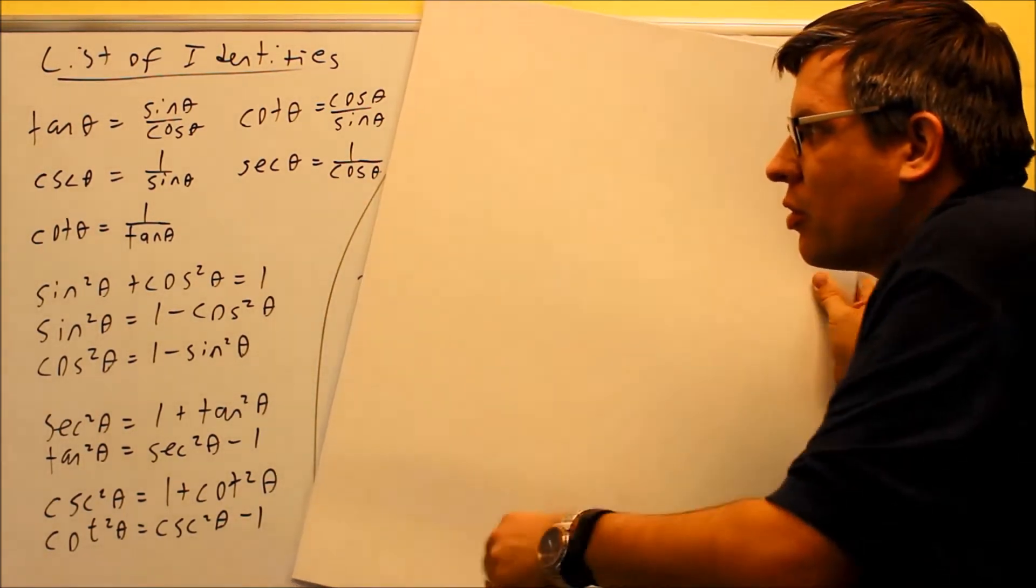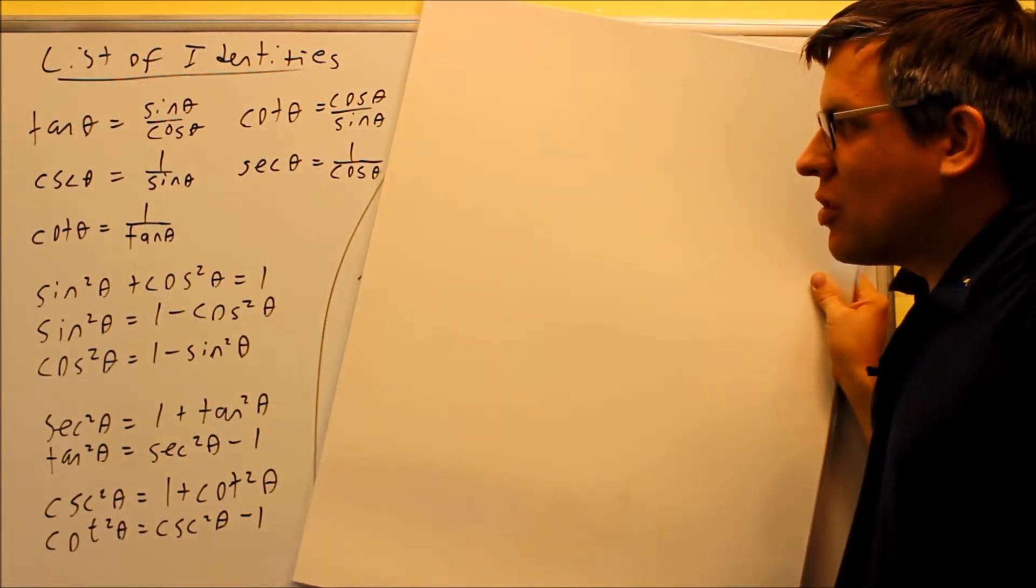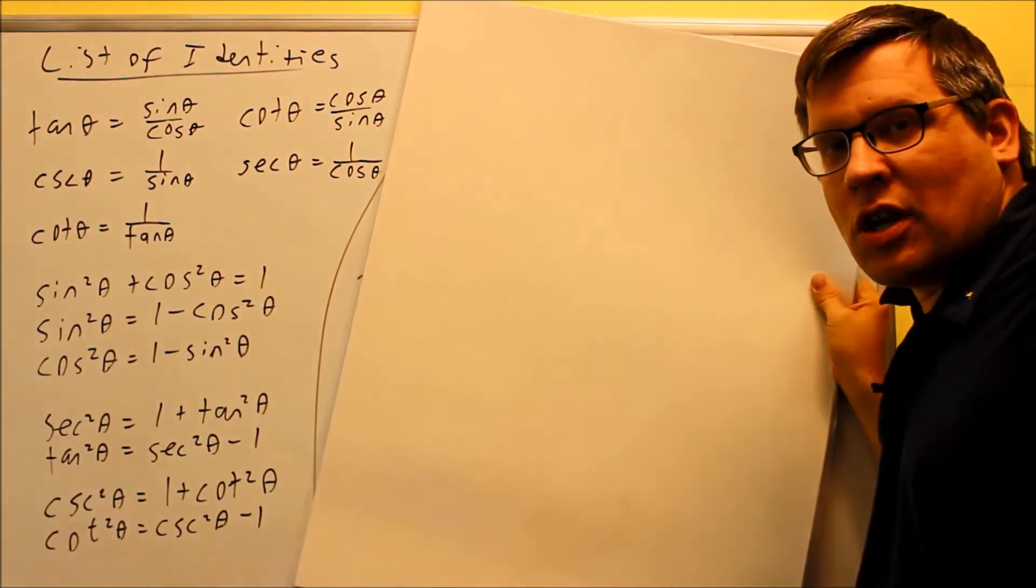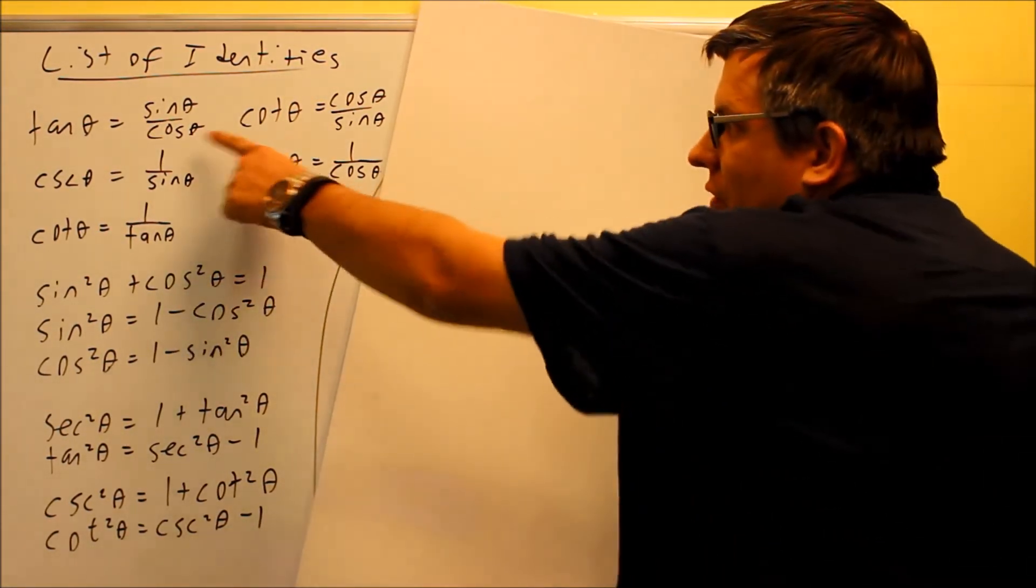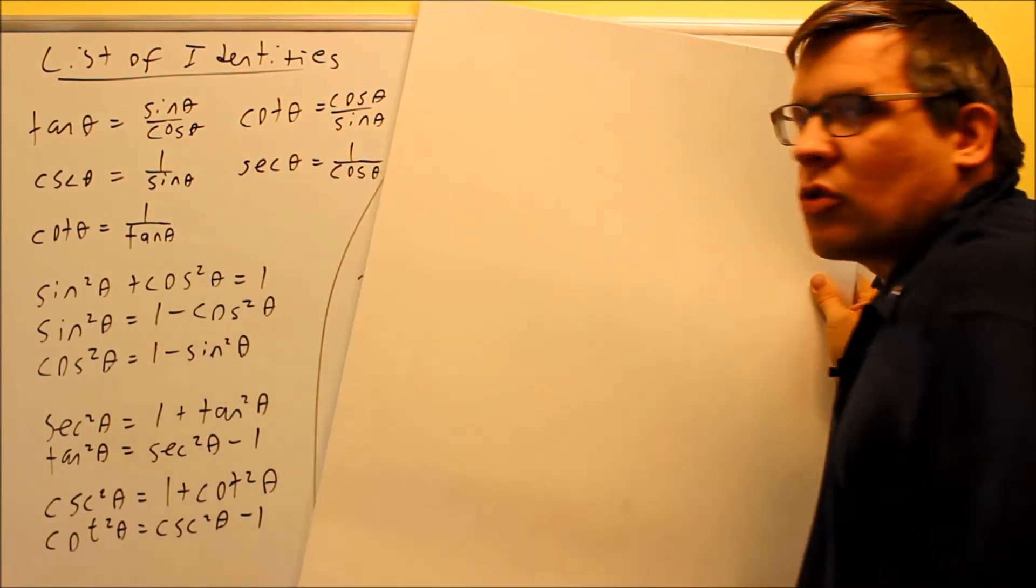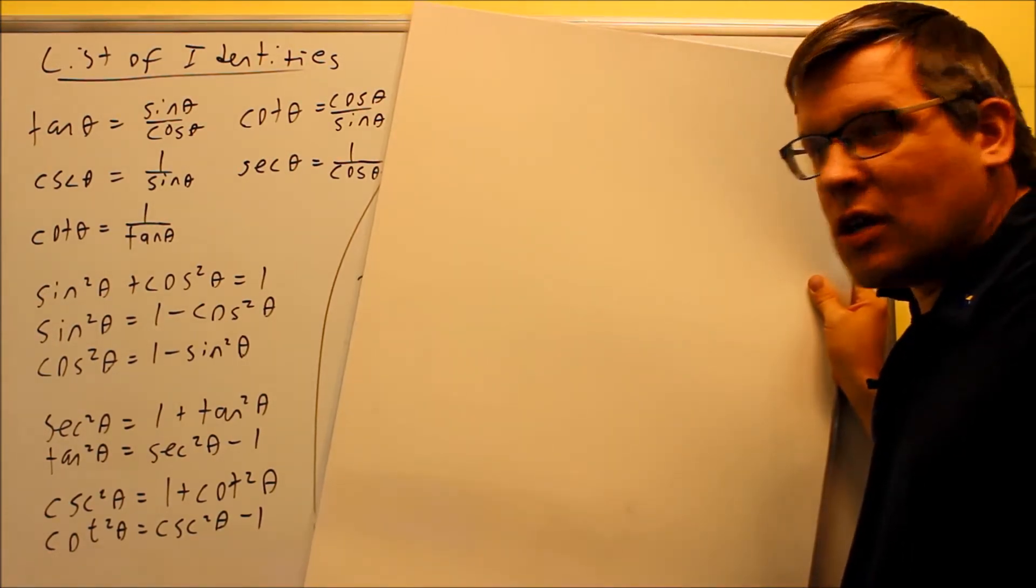The ones up here are ones you've probably already seen. These are our reciprocal identities, these three here. Cosecant can be written as one over sine, secant can be written as one over cosine, and we have cotangent can be written as one over tangent. However, we also have these up here which also deal with sines and cosines, so there's a way that we can take the tangent and cotangent and rewrite those with sines and cosines.